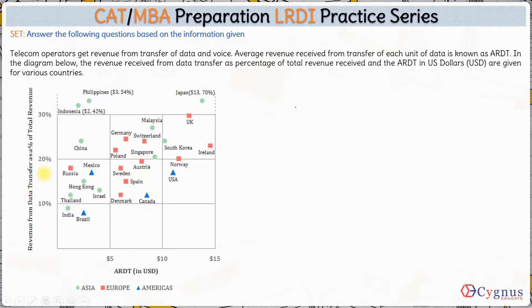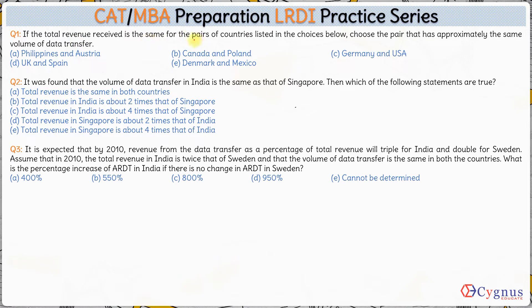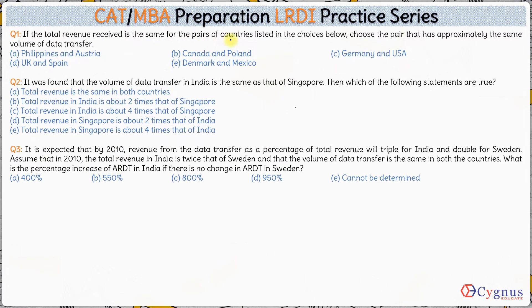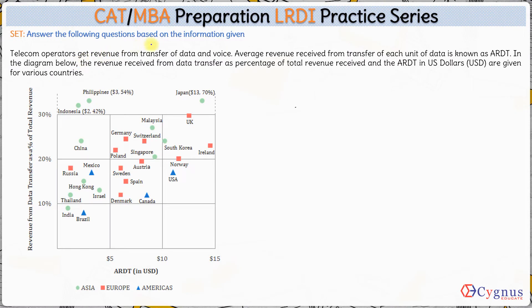The first question is: if the total revenue received is the same for the pair of countries listed in the choices below, choose the pair that has approximately the same volume of data transfer. We are given that total revenue is the same for each pair of countries; what we have to figure out is which pair will have the same volume of data transfer. Revenue from data equals total revenue multiplied by percentage of revenue from data. For example, for India the percentage revenue from data is approximately 9% of the total.